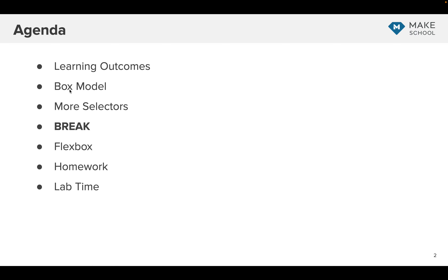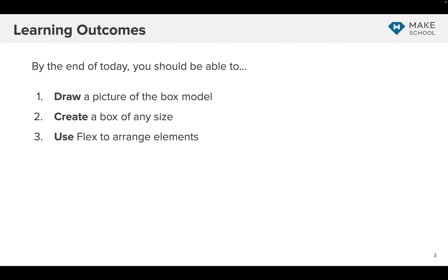We'll go over the learning outcomes, talk about the box model, review selectors, take a break, talk about flexbox, and then review the homework. There's some lab work for you to do to practice all these things. By the end of class today, you'll be able to draw a picture and describe the CSS box model, create a box of any size — something on the screen that might contain some content — and use flex to arrange elements on the screen.